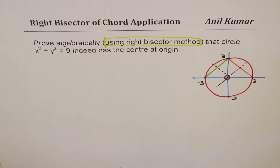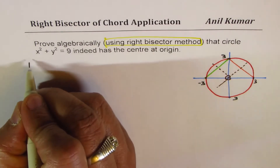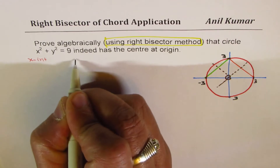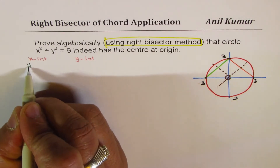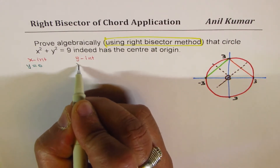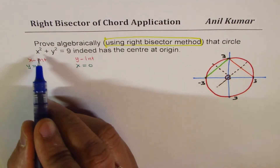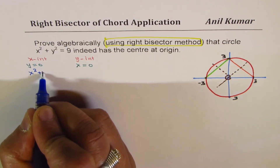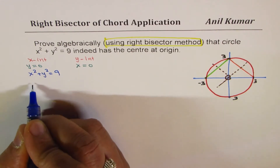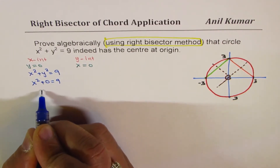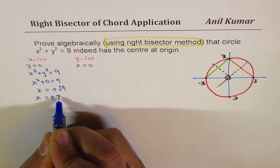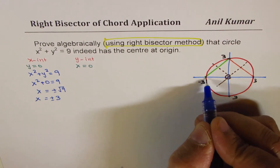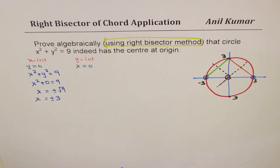Let's begin by finding the x and y intercepts for our equation. The x-intercept means y = 0. Substituting y = 0 into x² + y² = 9, we get x² = 9, so x = ±√9, giving x = ±3.